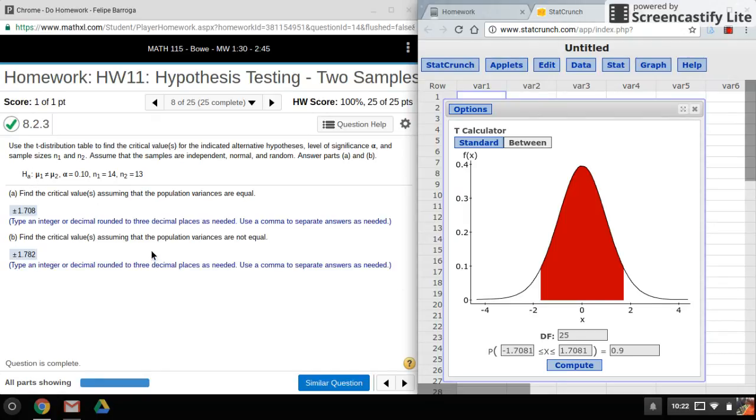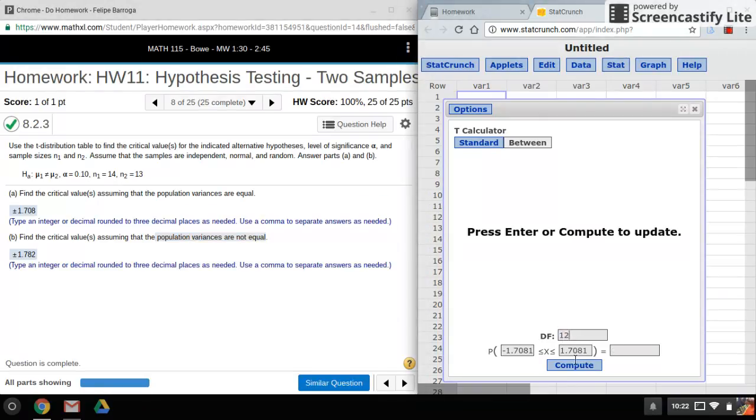Now the other scenario is what if the population variances are not equal? In that case, what you need to do is take the smaller of your two sample sizes and subtract one. This is my smaller sample size, I'll do minus one, that'll give me 12 degrees of freedom. And again I'll put in my one minus alpha because we're doing between.